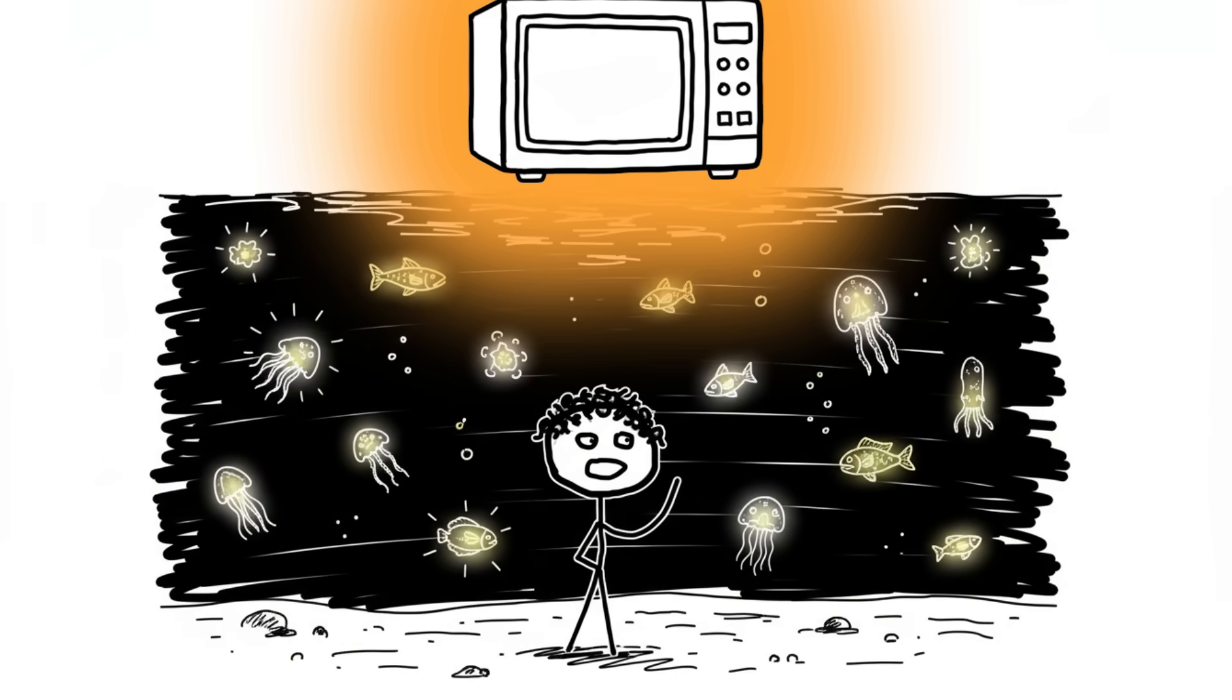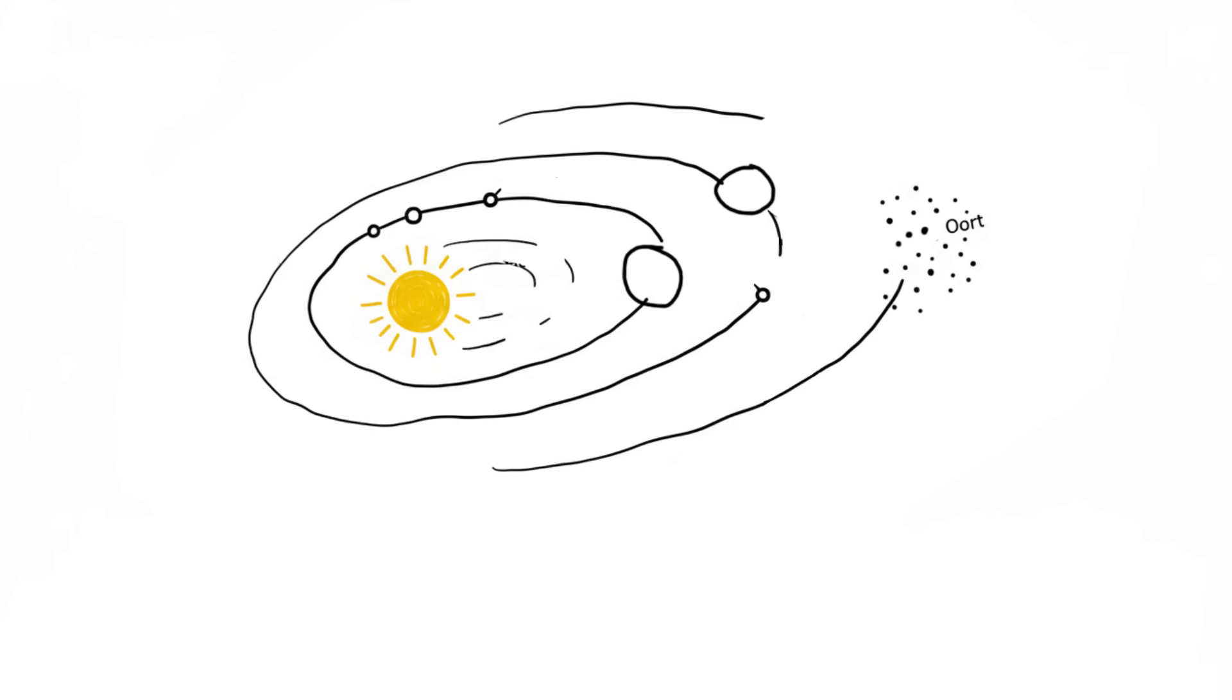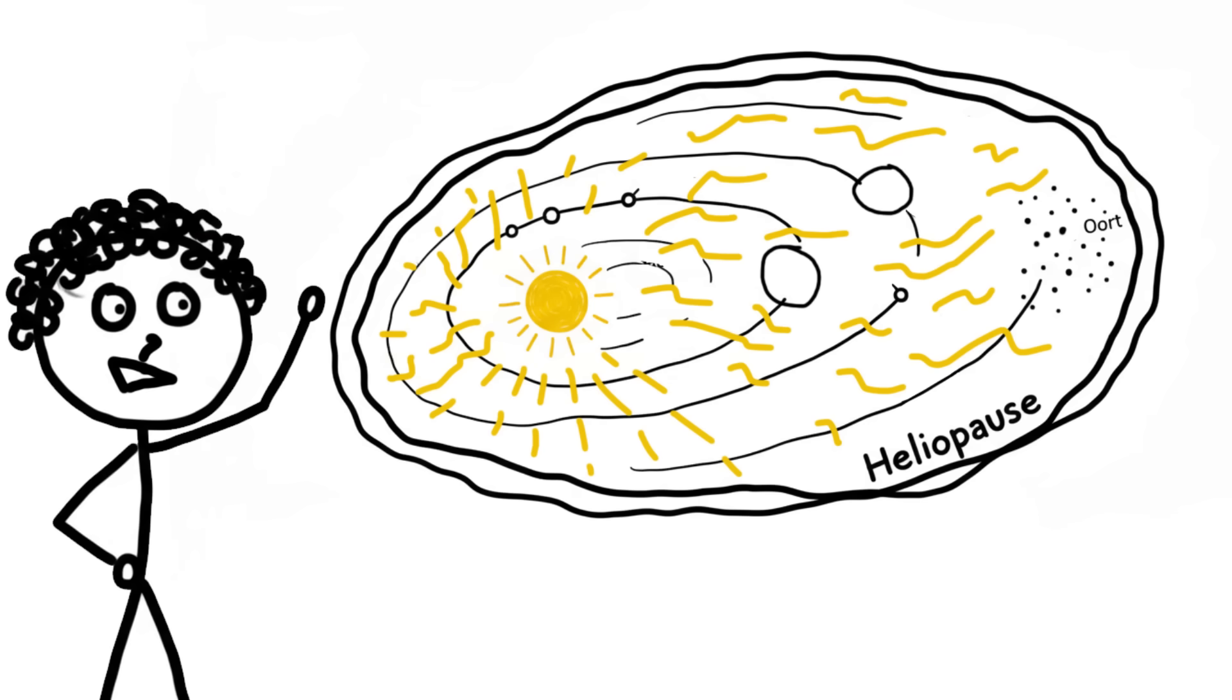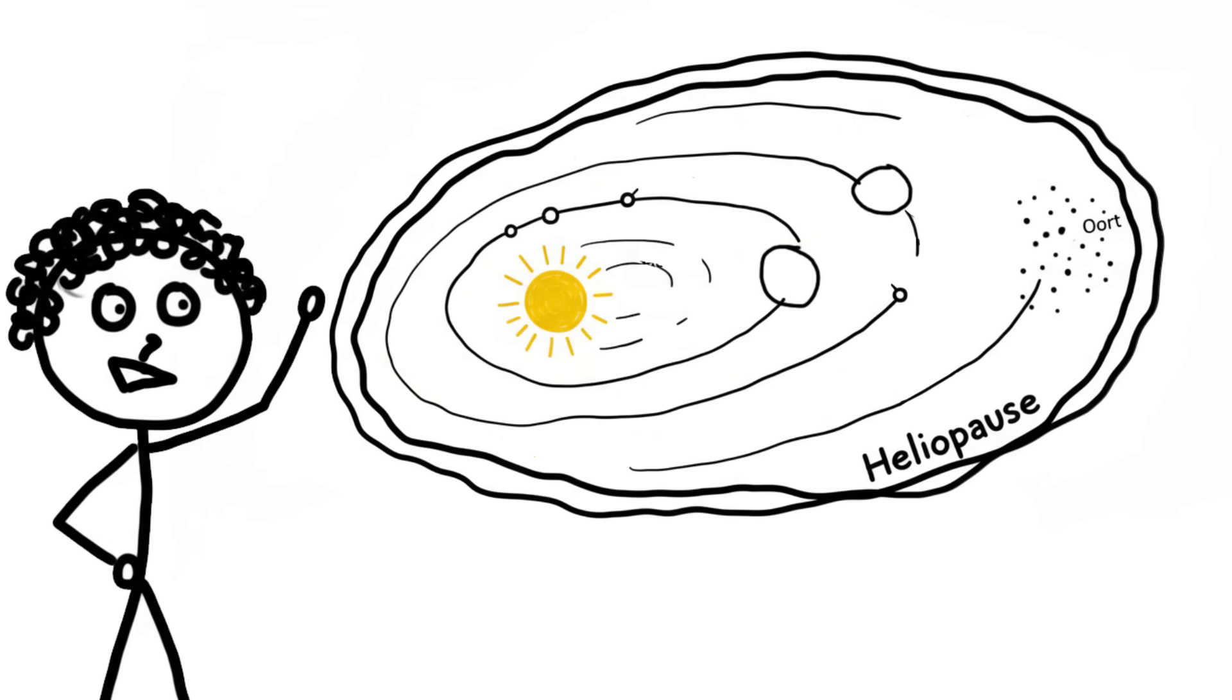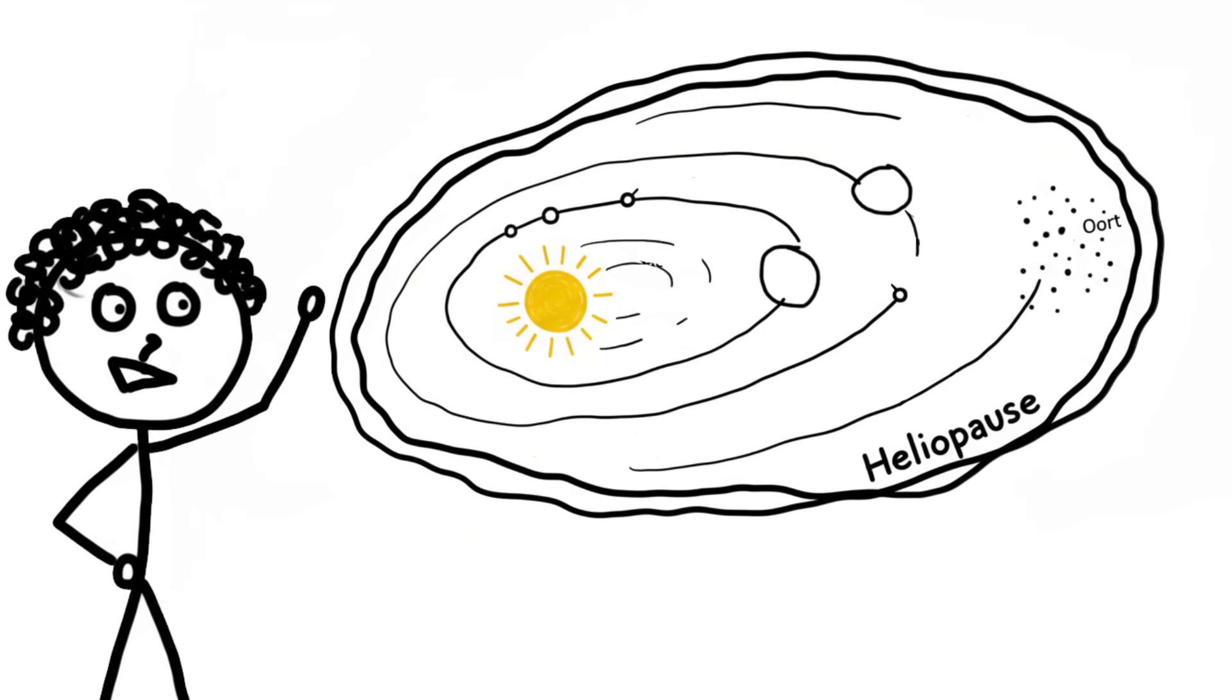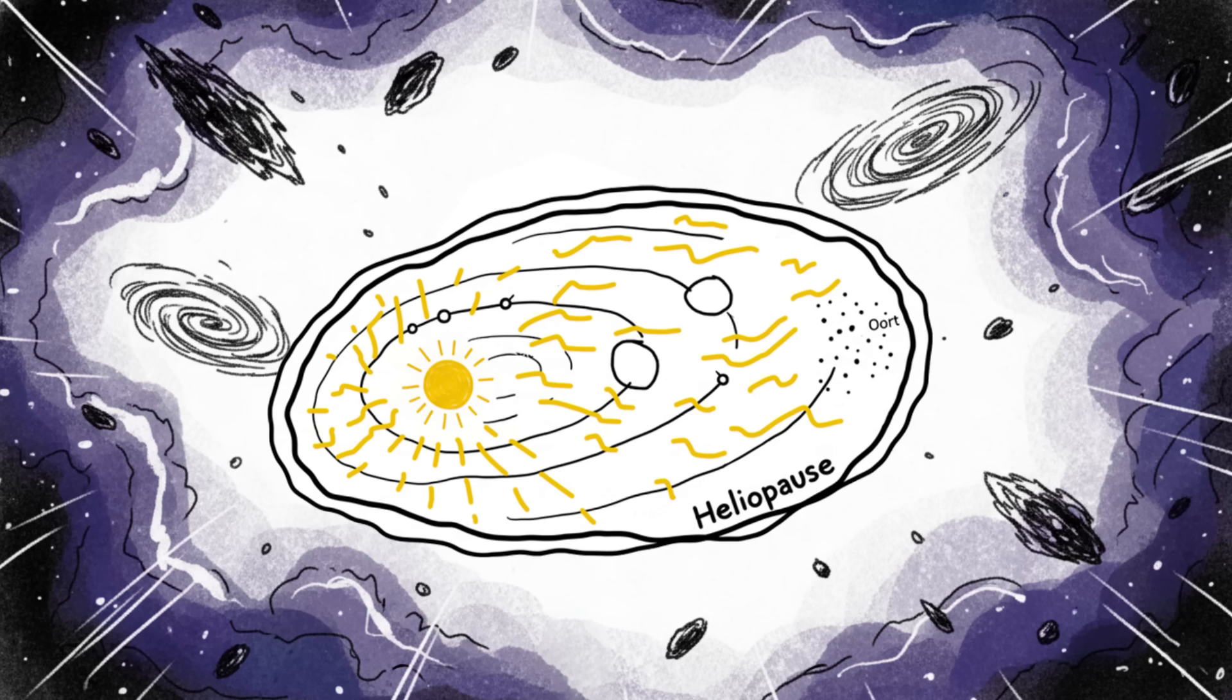Number one, the heliopause bubble. The true definitive end of our solar system isn't Pluto or the Oort Cloud, but the heliopause. This is the final frontier where the constant stream of charged particles pouring off the sun—the solar wind—is finally halted by the pressure of the interstellar medium, the gas and plasma floating between stars. Our solar system is essentially a gigantic protective magnetic bubble called the heliosphere, created by the sun, shielding us from the much harsher, more dangerous galactic environment.